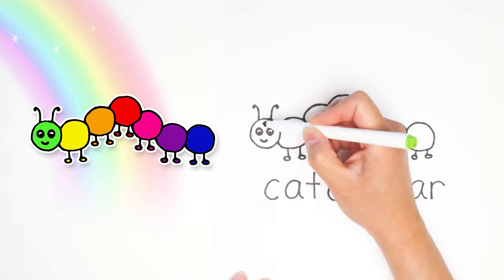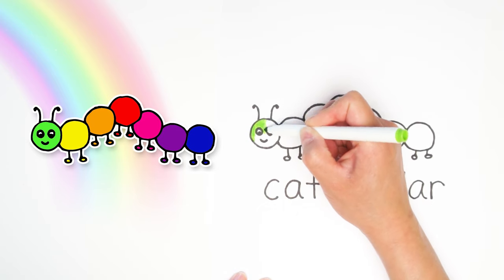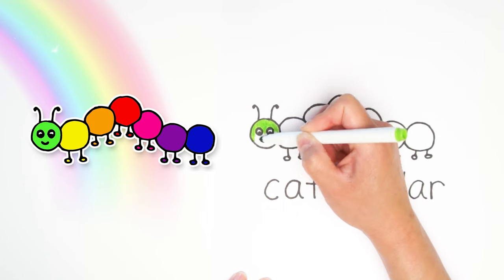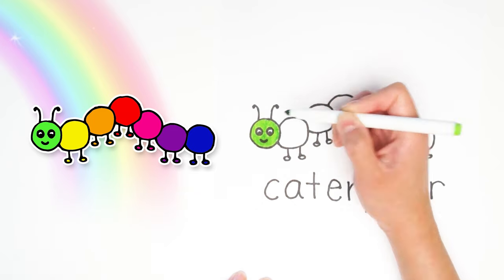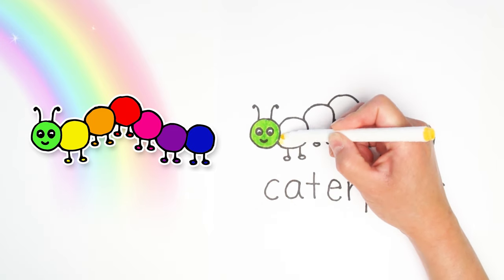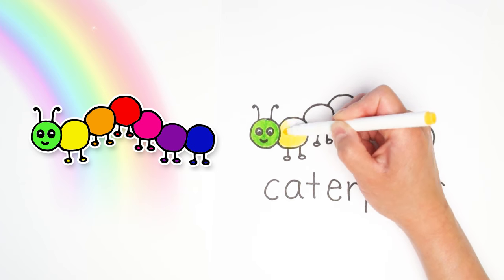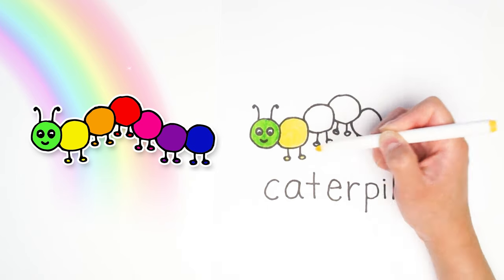All right, next is my favorite part. We get to color in our caterpillar. You can choose all green or any color you want, but I'm going to choose rainbow colors to color all my body parts. All in different colors. I'm going to start with green.